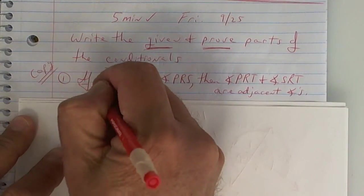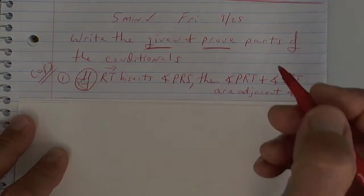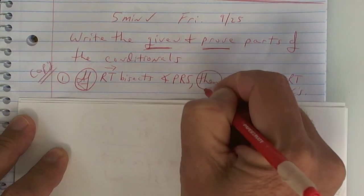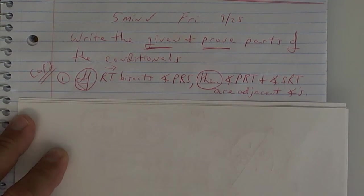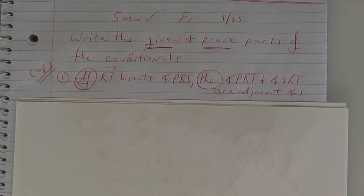Circle the word if and circle the word then. Now, which part would be the hypothesis here, Michael? Read the part that's the hypothesis, please. If RT bisects angle PRS. That's the hypothesis? Yeah.